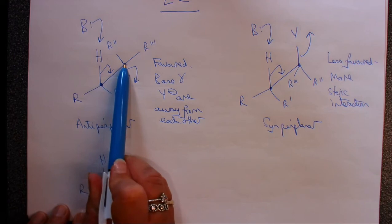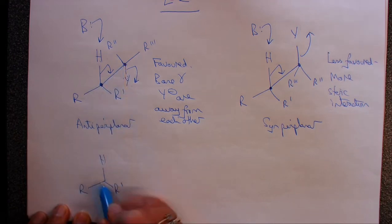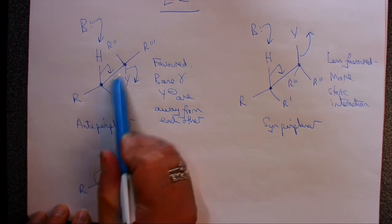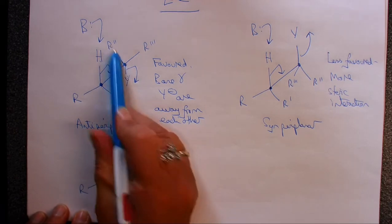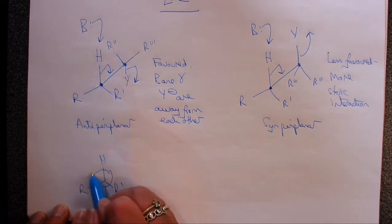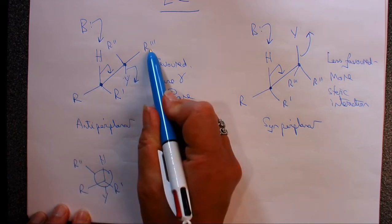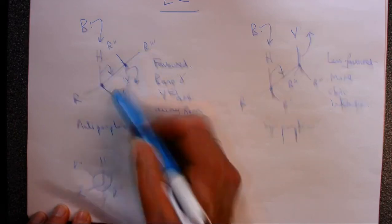And behind us, if we were looking along this bond, we'd see the Y pointing down. So if we have a circle here to show that's a front carbon, we'd have the Y pointing down. And if we were to look along there, we would see the R2 between the H and the R. We'd see the R3 between the H and the R1.